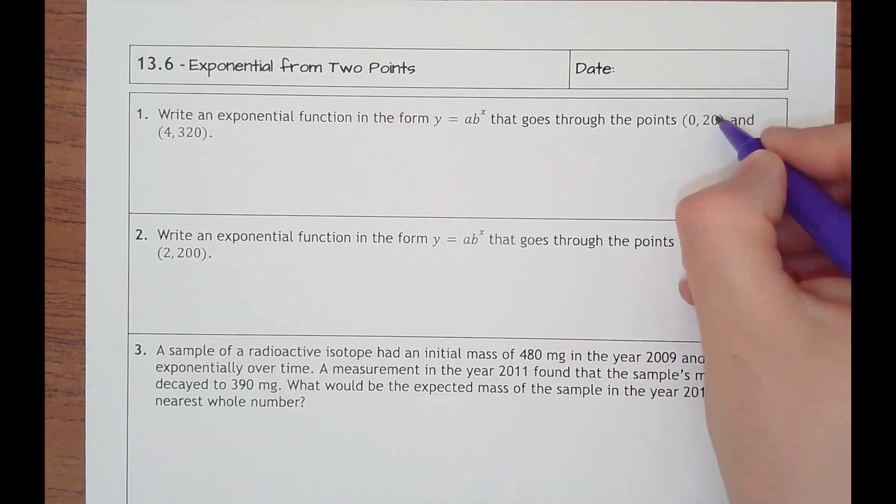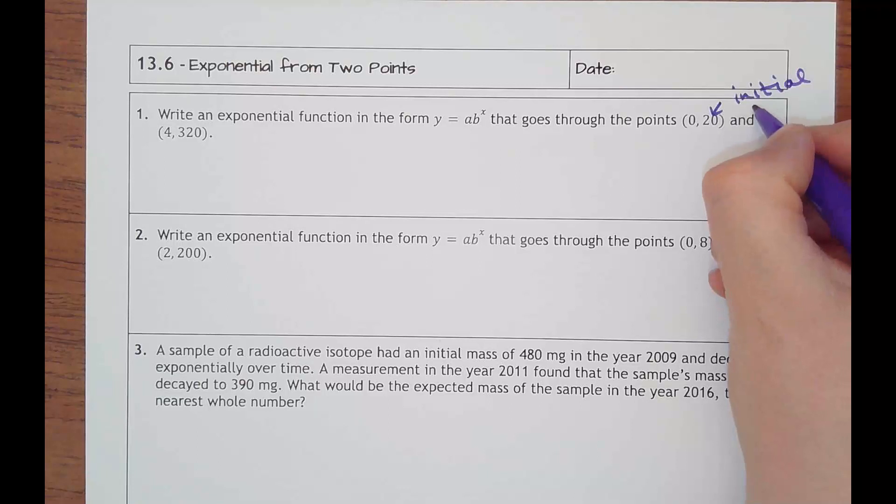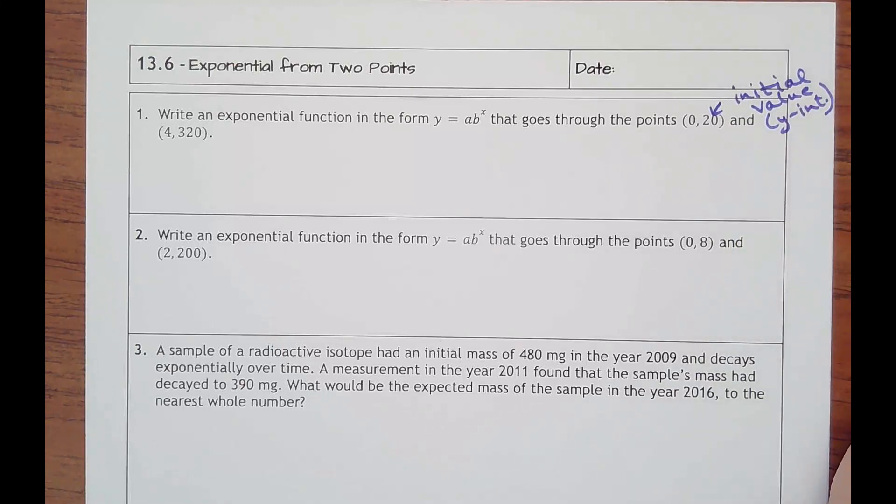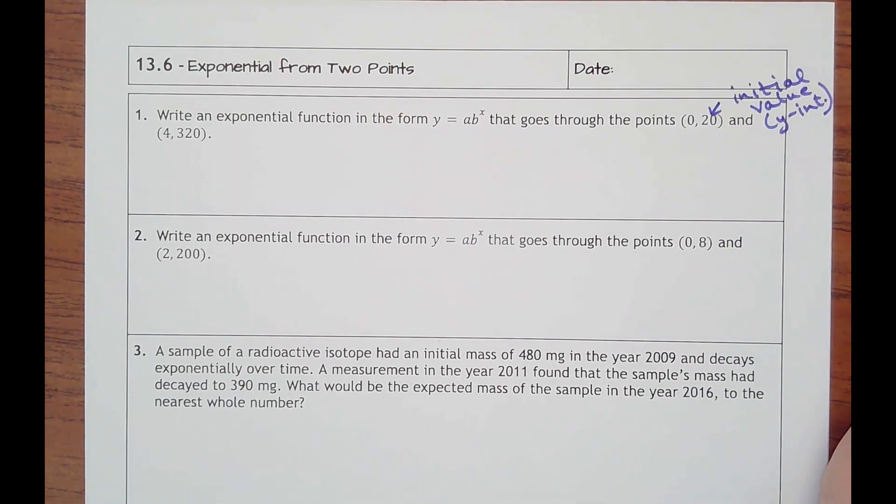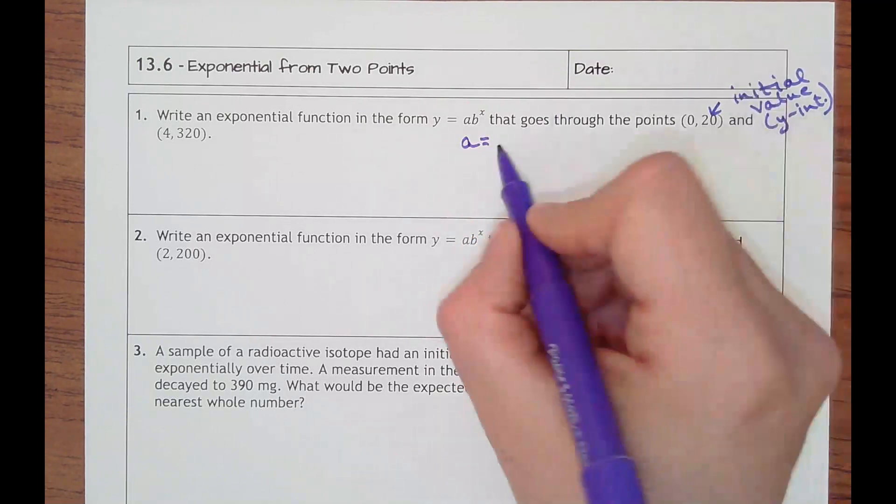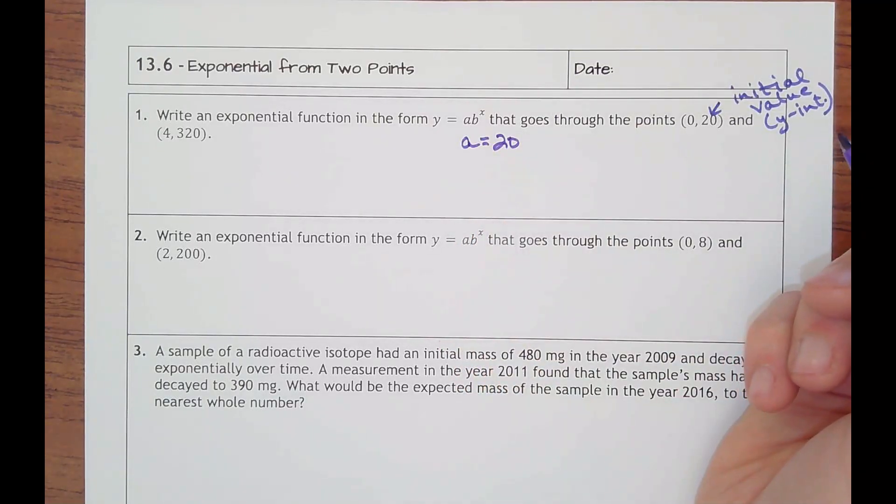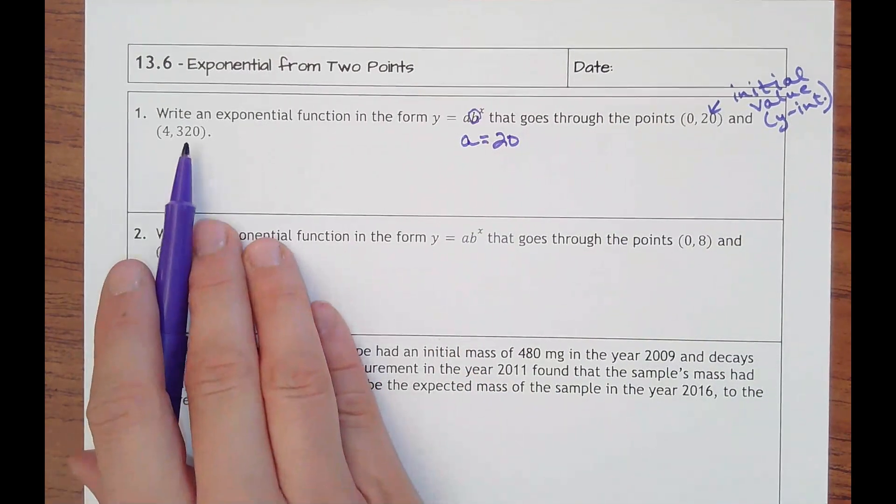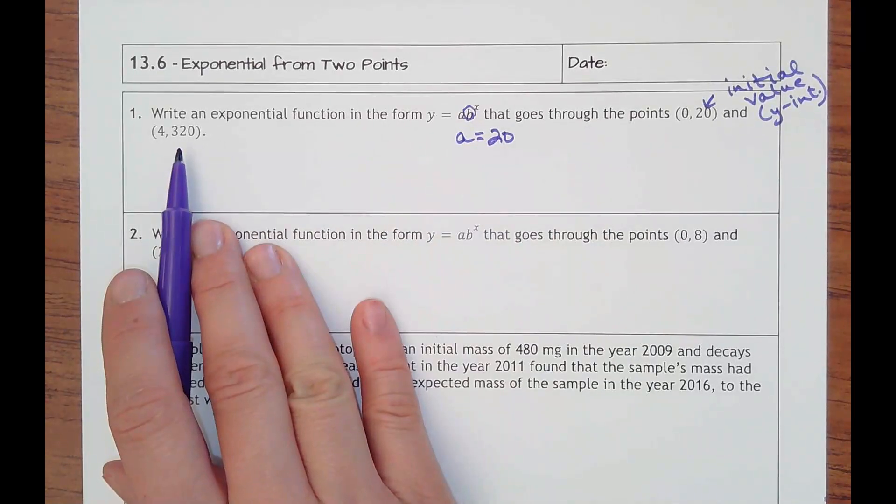The nice thing about this is the first point is actually your initial value. It's also your y-intercept that is its initial value on the graph. That tells me my a is where I'm starting, so that's 20. The only thing I don't know is the b - the growth rate or decay rate. Obviously I'm growing because I'm going from a y value of 20 to 320.